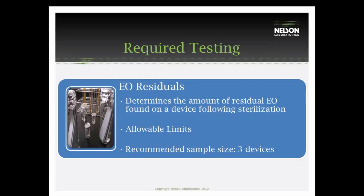Following the full cycle, we'll test the samples for EO residuals. These samples will have been exposed to both a half and full cycle. What this testing does is determine the amount of ethylene oxide residuals found on the device following sterilization. ISO 10993-7 states specific levels that these residuals need to be under to pass this test. We recommend three samples for this testing.